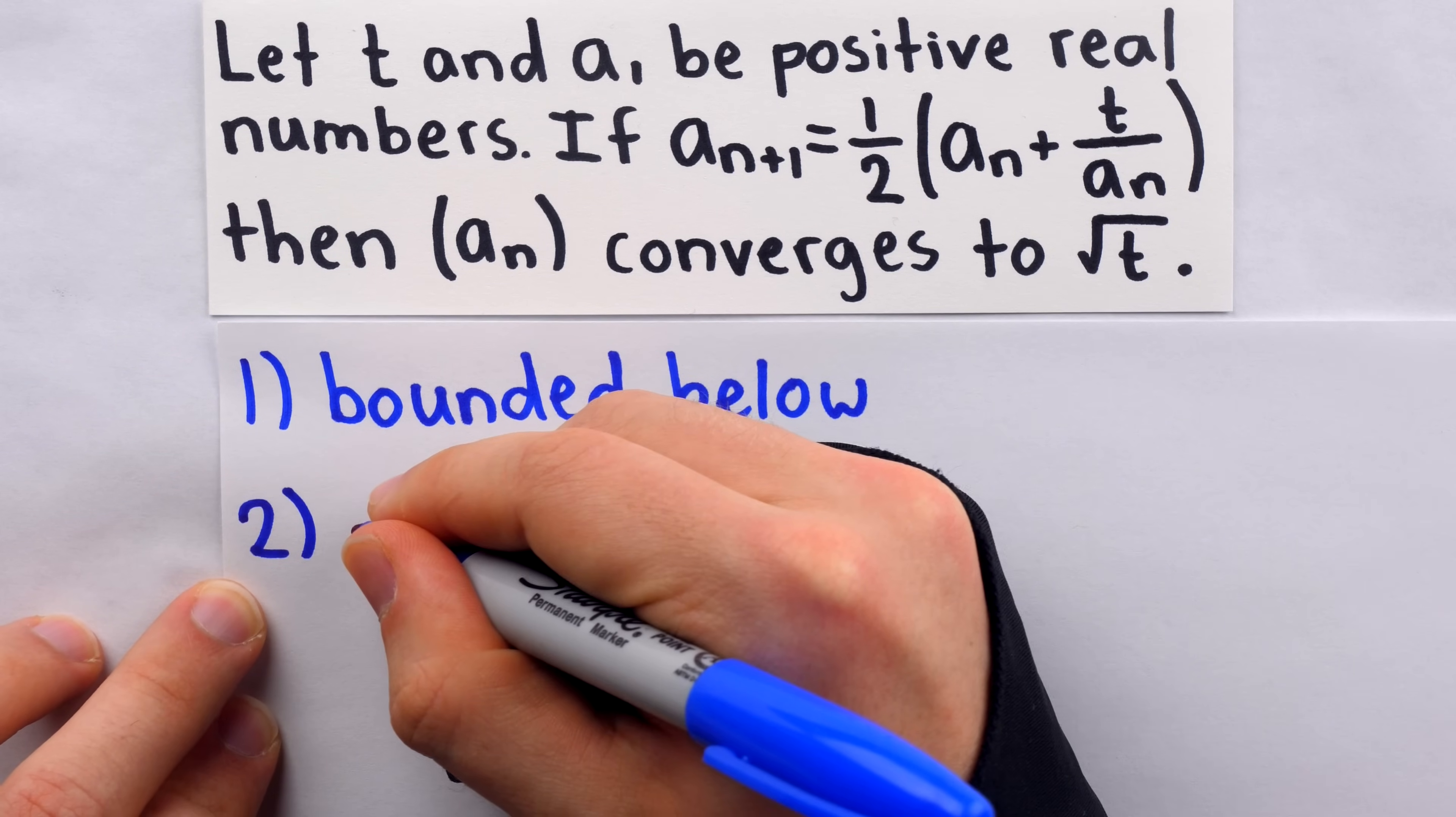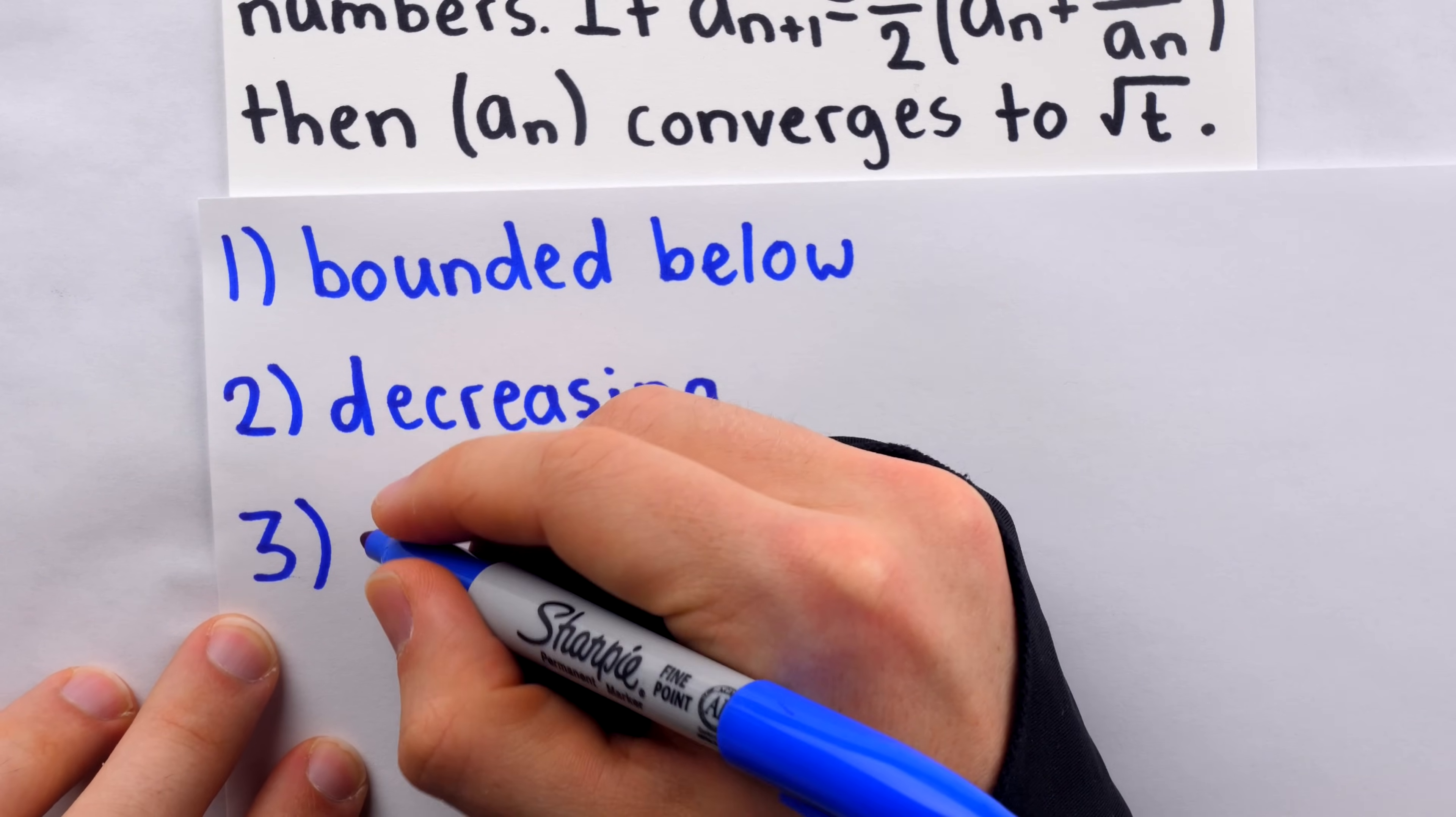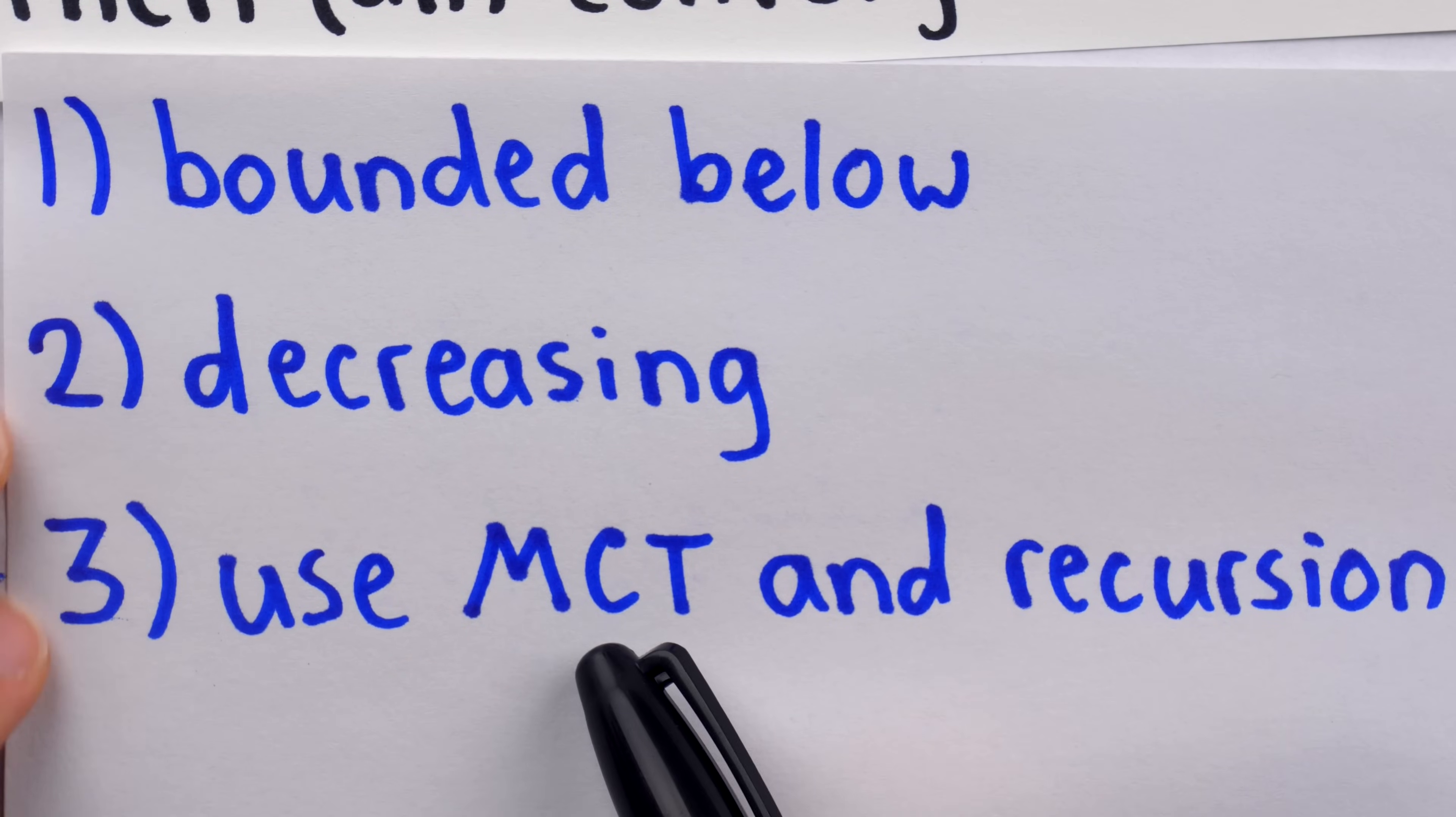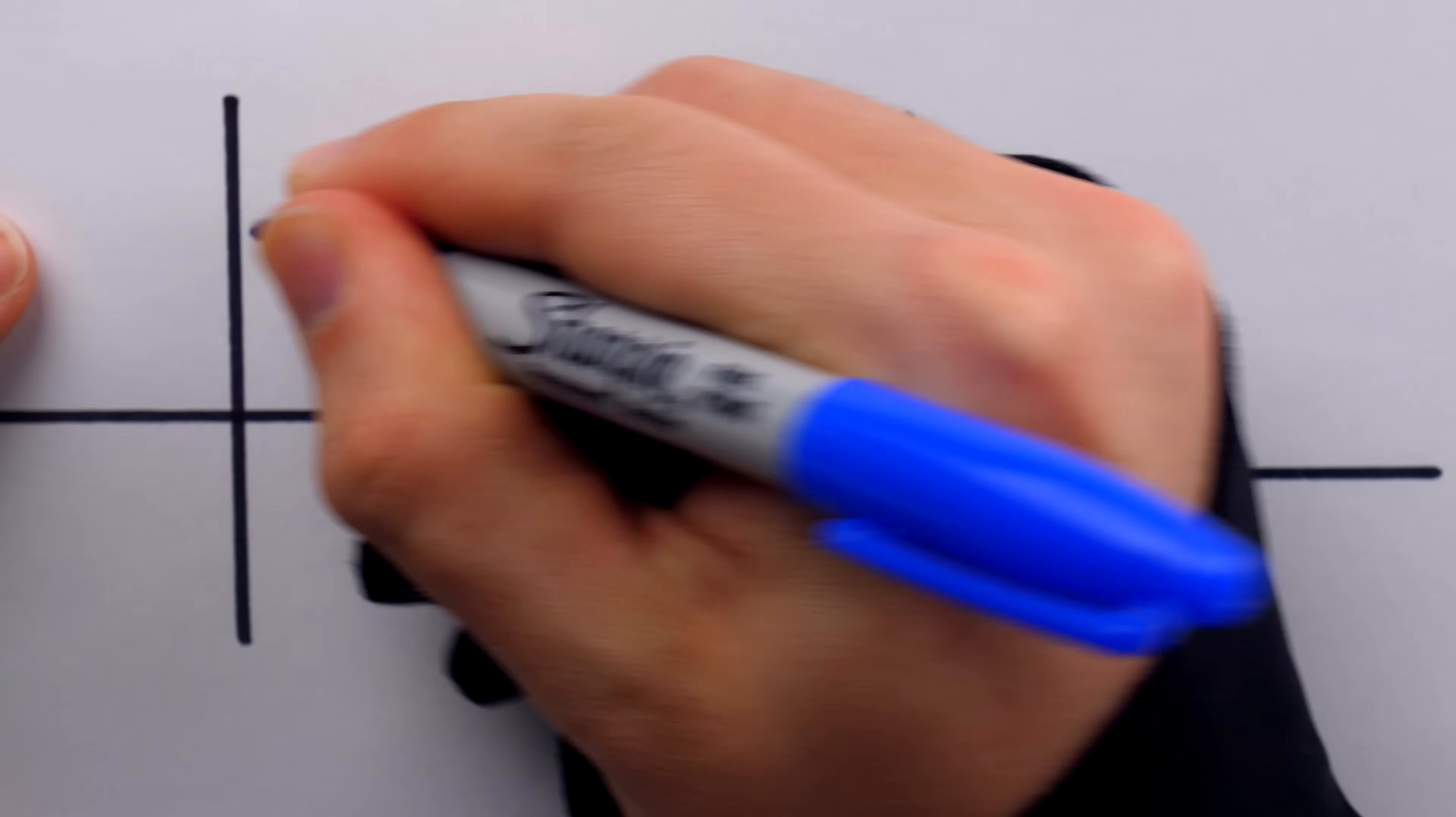So, we get overestimates, but these overestimates are getting smaller and smaller. And then, we'll be able to use what's called the monotone convergence theorem and the recursion that defines the sequence to finally establish our claim. The monotone convergence theorem tells us that if a sequence is bounded below and decreasing, then it must have a limit. It must converge to something.